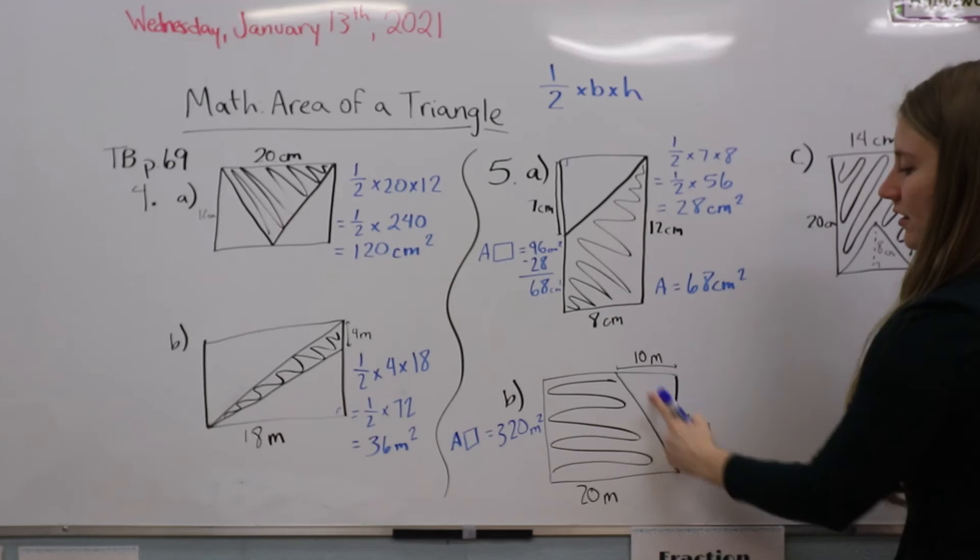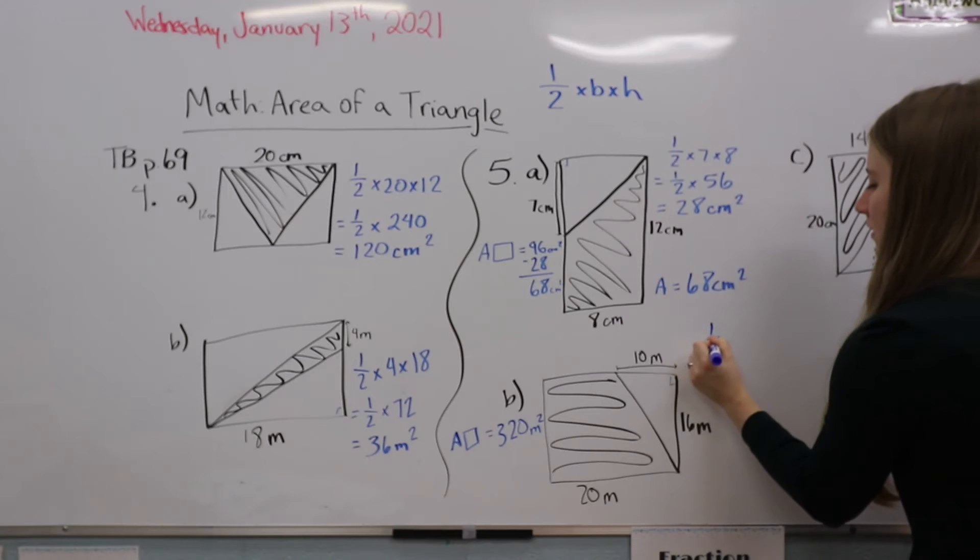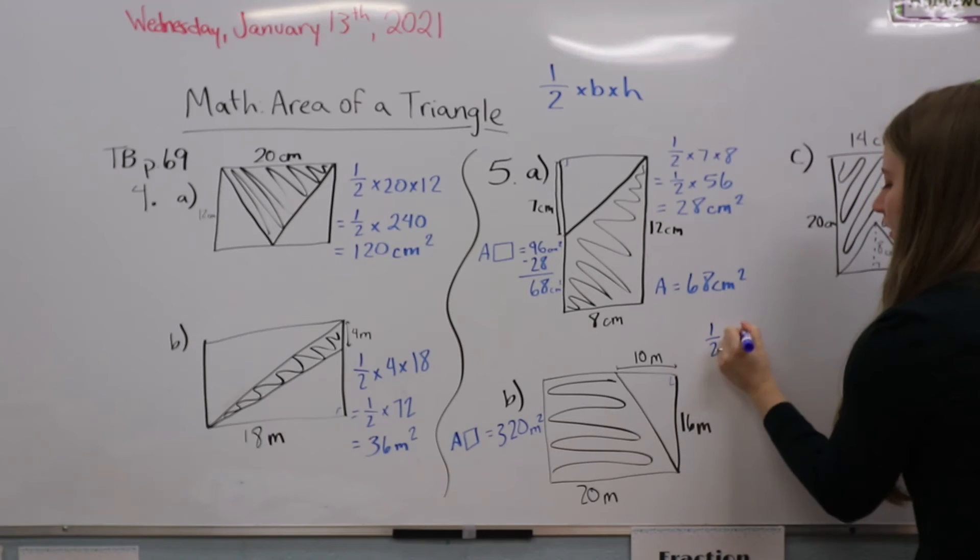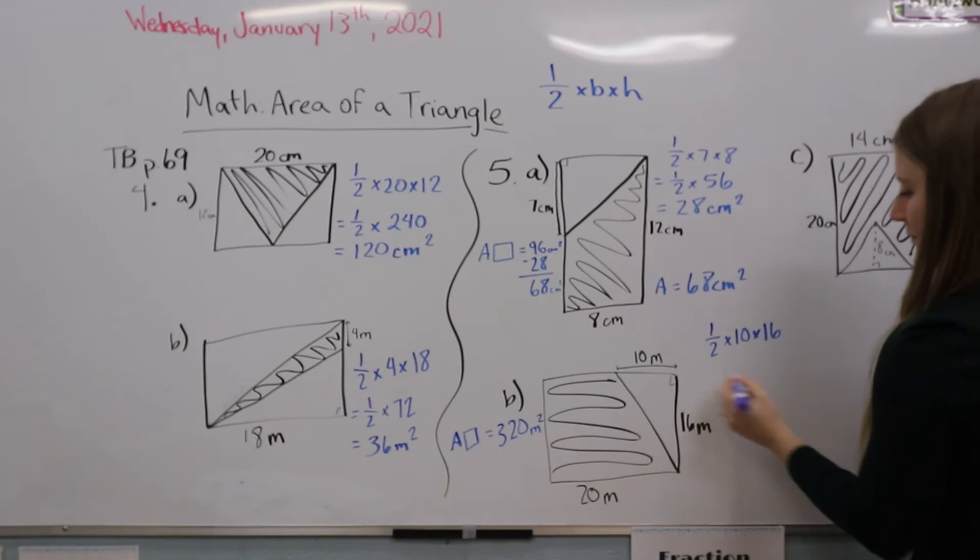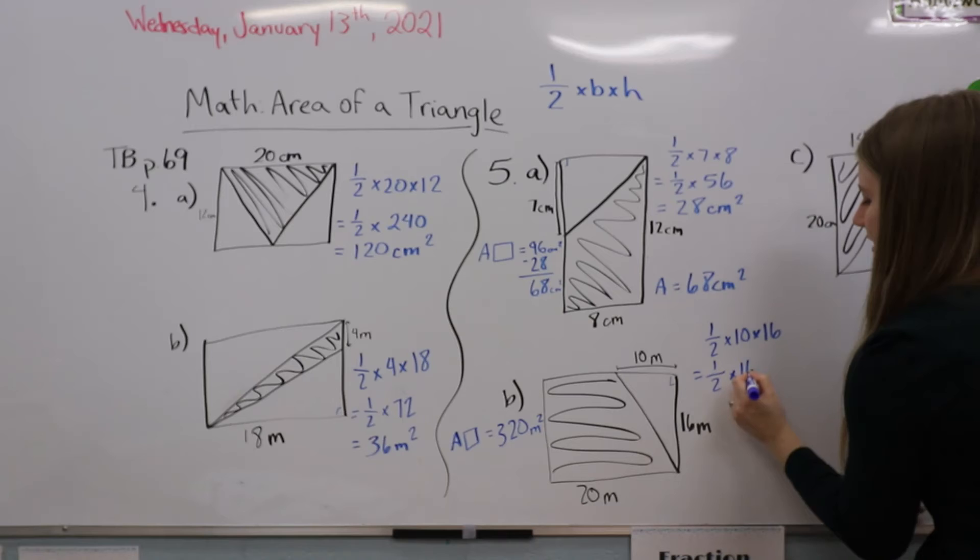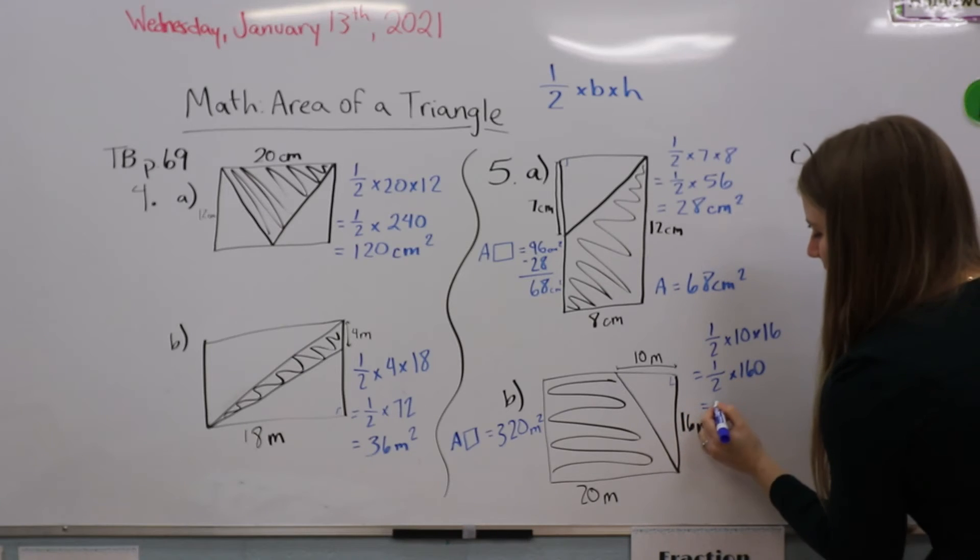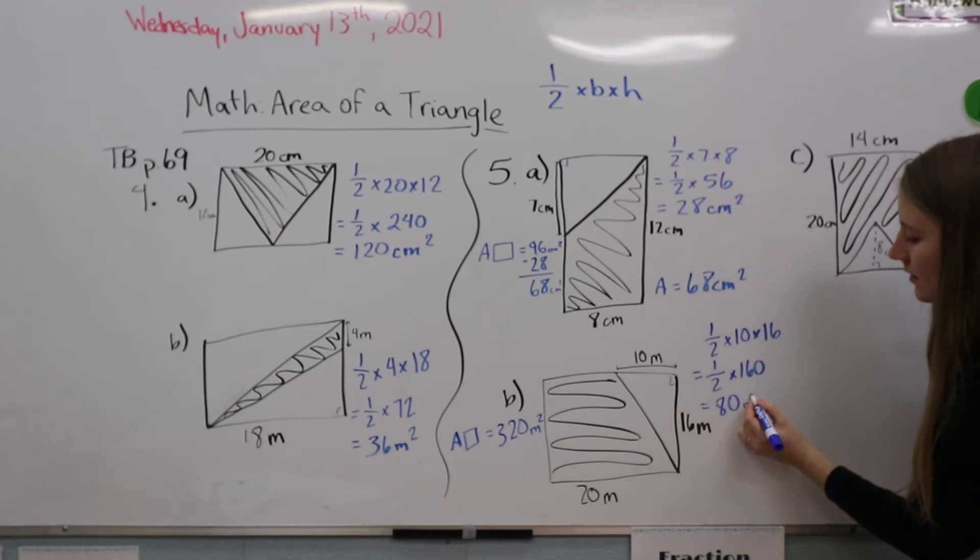Now we're going to find our triangle. You can see this is our little right angle, so we're working with this base and this height. Half times 10 times 16, which is half times 160, which means it's 80 meters squared.